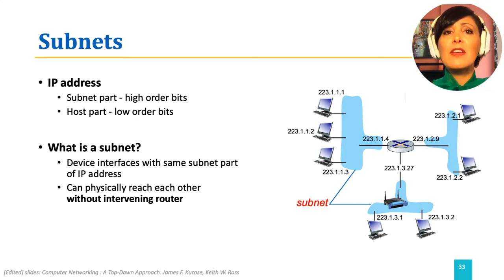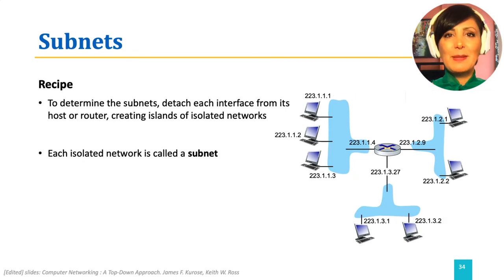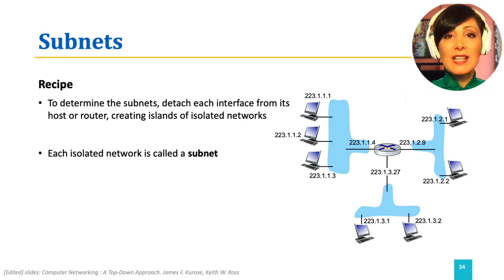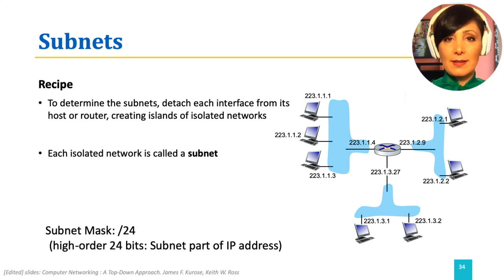Therefore, we can think of devices connected to each interface of a router as a subnet. A simple way of finding the subnets within a network is to detach the router interfaces and name each resulting isolated network a subnet. For example, in this figure, we only have one router. Detaching the switches connecting to these router interfaces will show that we have three subnets in the network. The high-order bits of each of these networks define the subnet.